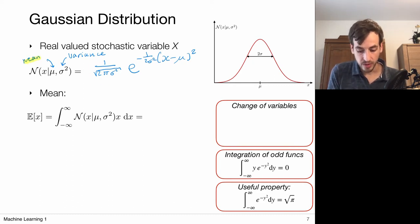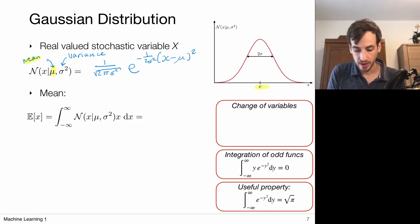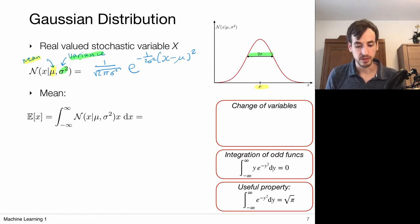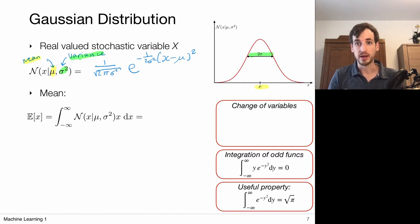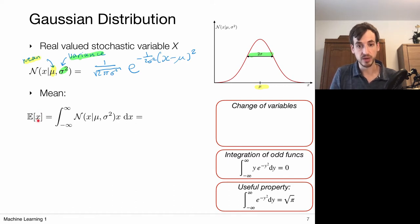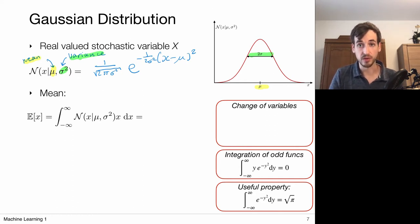We have a mean parameter that determines the location of the maximum, and a variance parameter that determines the width. I've been calling mu the mean of the distribution for a reason: if we actually compute the expected value of x, where x is drawn from this normal distribution, we can show that this expected value equals mu. So now we have an analytic form of the distribution — let's actually do this computation and compute the expected value.